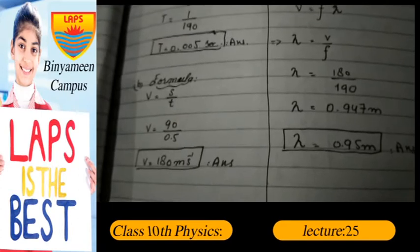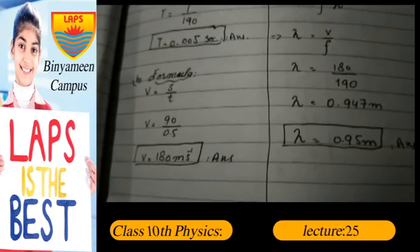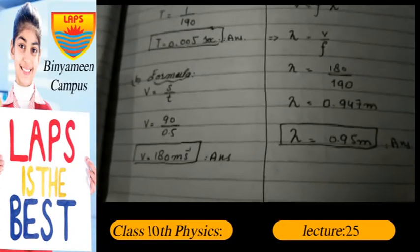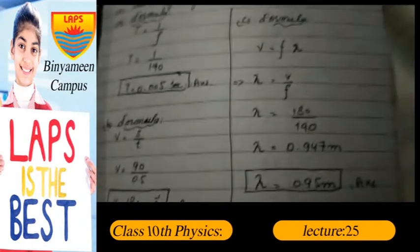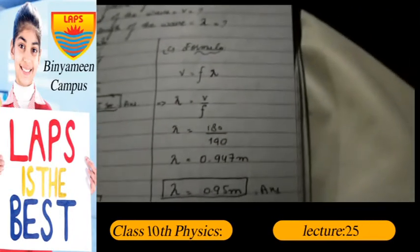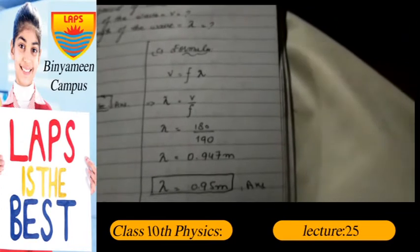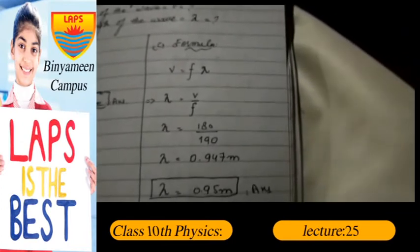= 90/0.5. After dividing, we get 180 meters per second. For Part C: v = f lambda.